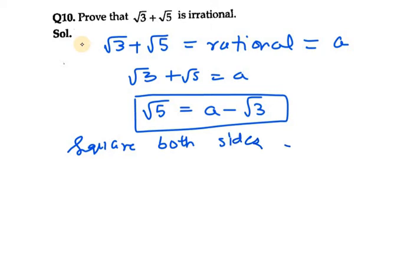We are squaring both sides because we have √5 and √3. Whenever we have numbers such as √5 and √3, we need to square both sides to eliminate the radicals.